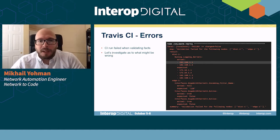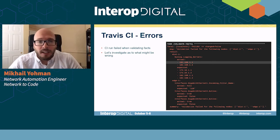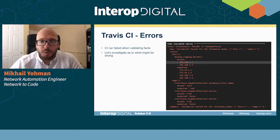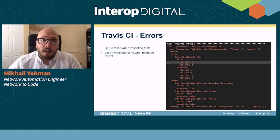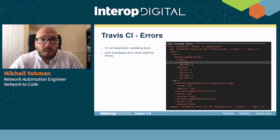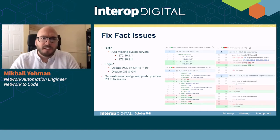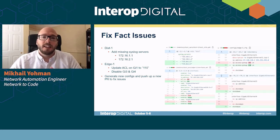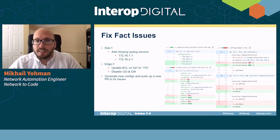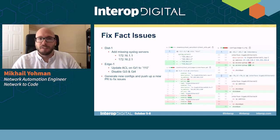If we run this, we get our CI results back. As you can see, the actual configured logging servers on dist1 are different from what we expect — we're missing two servers and there is a typo: 172.16.1.2 should be .2.1. On edge1, we're expecting an ACL of 110 but not seeing one, and we're also seeing two interfaces that should be disabled. After going to fix those, you can see the pull request diff — we've added the two logging servers to dist1, updated the access list on edge1, and disabled those two interfaces. After regenerating our configurations, it has the right access list and the two ports are shut down.